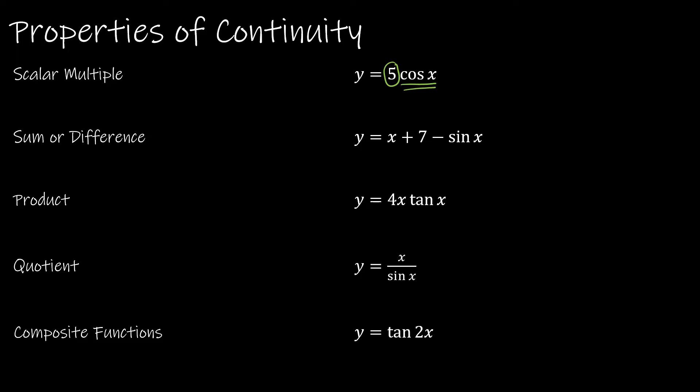Sum or difference says if you're finding the sum or difference of different functions, look at the continuity of each of those functions by themselves. x + 7, that's linear. So I'm looking at that whole thing. X is continuous, 7 is continuous, sine of x is continuous, this entire function is continuous everywhere.